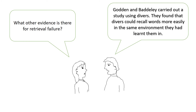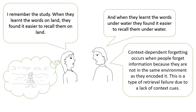So what other evidence is there for retrieval failure? Godden and Baddeley carried out a study using divers. They asked participants to remember and recall some word lists, either in the same environment that they learnt them in or in a different environment. When they learnt the words on land and recalled them on land, they had better recall. They also had better recall when they learnt the words underwater and recalled them underwater. When people forget information because they are not in the same environment as they encoded it, it is called context-dependent forgetting. This is a type of retrieval failure that occurs due to the lack of context cues.